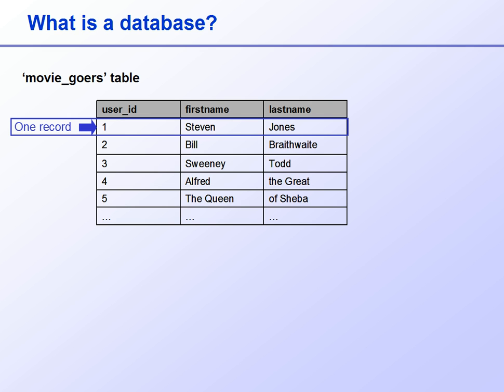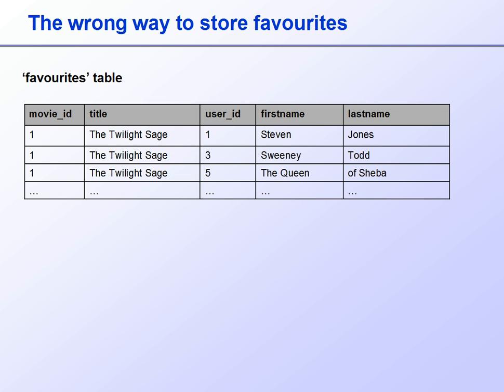Then we need to have a way to link the movies table and the moviegoers table, so that we can store certain movies as favourites for each user. A crude way to store favourites would be to store a list of favourite movies and the names of the people that like that particular movie, in a table called favourites.